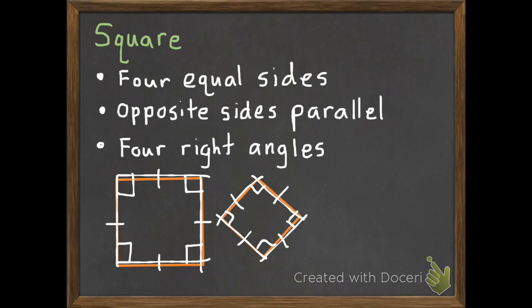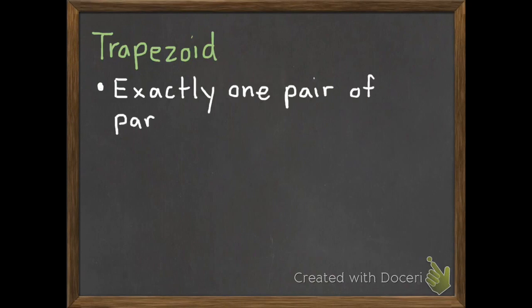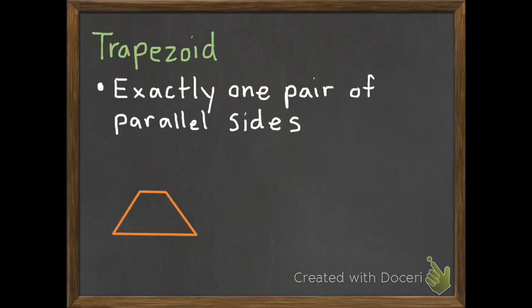Last of all, we have a trapezoid. To be a trapezoid, it needs to have exactly one pair of parallel sides, and that is its only requirement. Here is a trapezoid — it has exactly one pair of parallel sides: this and this are parallel.